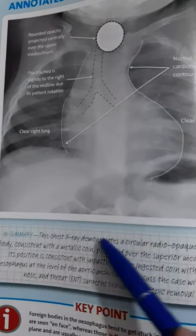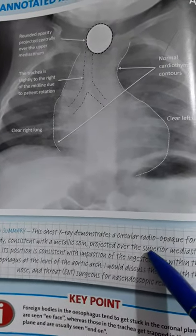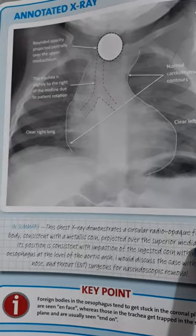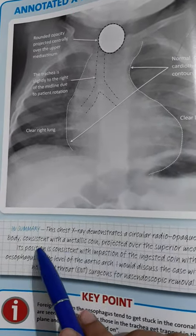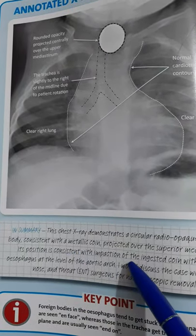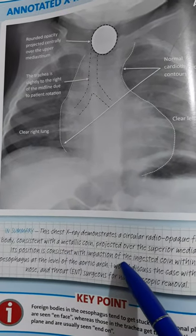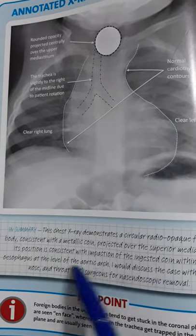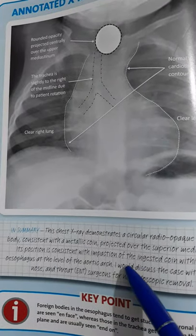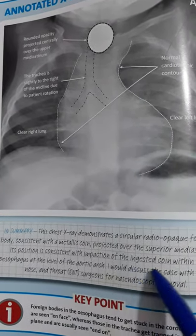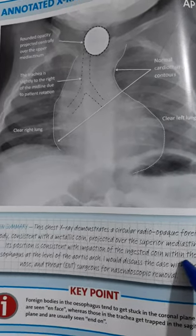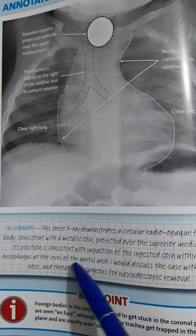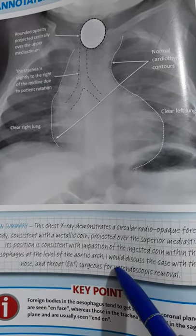In summary, this x-ray demonstrates a circular radio-opaque foreign body consistent with a metallic coin projected over the superior mediastinum. Its position is consistent with impaction of the ingested coin within the esophagus at the level of the aortic arch.